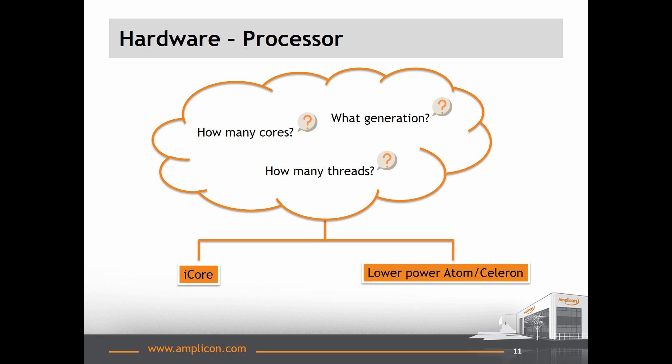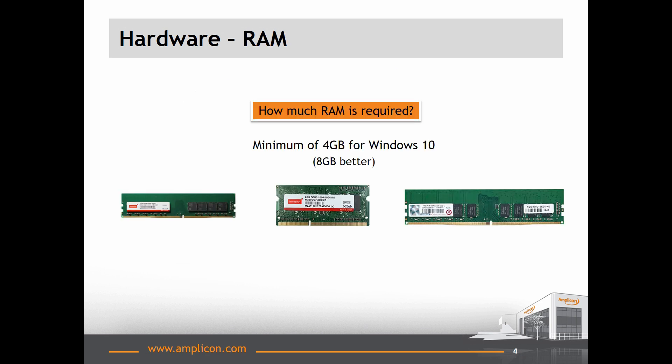Another piece of hardware you need to consider is the RAM. How much RAM do you require? I would always recommend at least 4 gig of RAM for a Windows 10 based system, but this really depends on your application. If your application requires high quantities of RAM, looking at a small fanless PC likely won't meet the requirement.